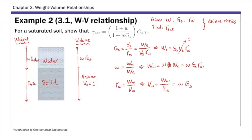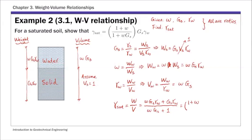Now the phase diagram is complete. Gamma saturated, one of the six basic definitions, is total weight over total volume. We sum everything from the phase diagram. Factoring out GS and gamma w gives the expression we're looking for: gamma saturated equals GS times gamma w times (1 plus moisture content w), divided by (1 plus w times GS). That is the relationship between these quantities and saturated unit weight.